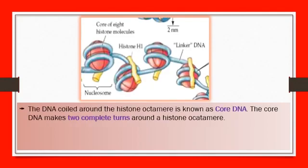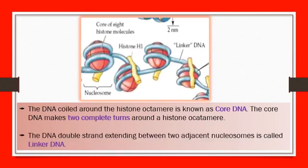The DNA coiled around the histone octamer is known as core DNA. The core DNA makes two complete turns around a histone octamer. The DNA double strand extending between two adjacent nucleosomes is called linker DNA.